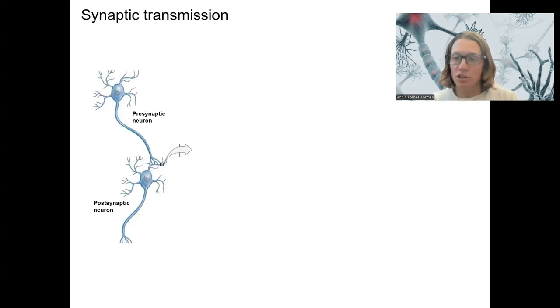Synaptic transmission is communication from one neuron to another. Pre-synaptic neuron is the first in the sequence, post-synaptic is the second. If we had another one down here, it would be a post-synaptic neuron, and this one would be pre in the context of one neuron talking to another. Synapses are where there's a connection between two neurons.